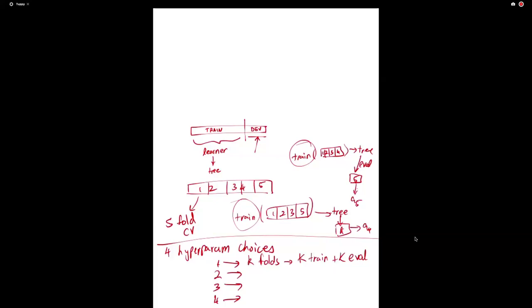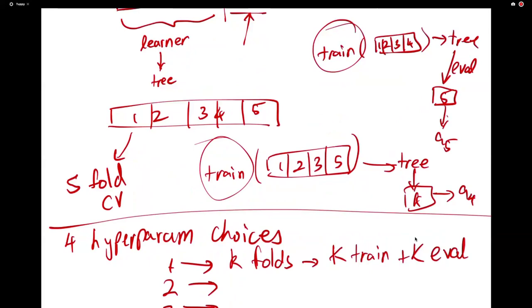Another question: how do you choose which examples go in the dev set? It should be random and representative of the training data. For example, if your full training data has positive and negative examples in a 3:1 ratio — 75% positive, 25% negative — then when you partition the data, the dev set should have the same ratio. This is called stratified sampling: you stratify by label and ensure label proportions remain the same.